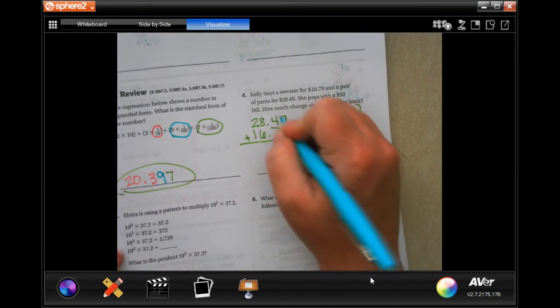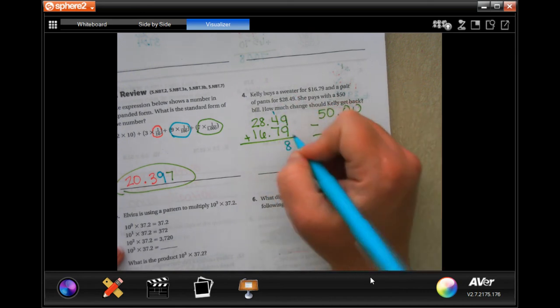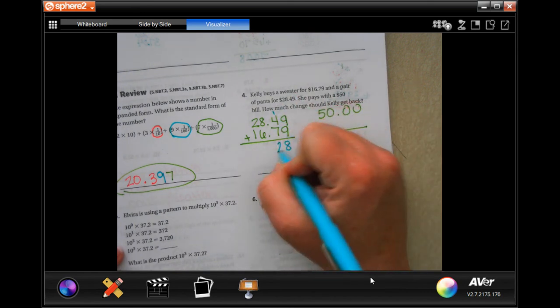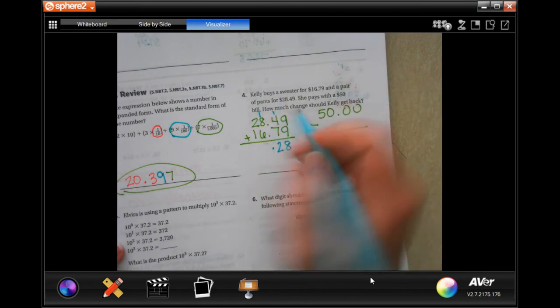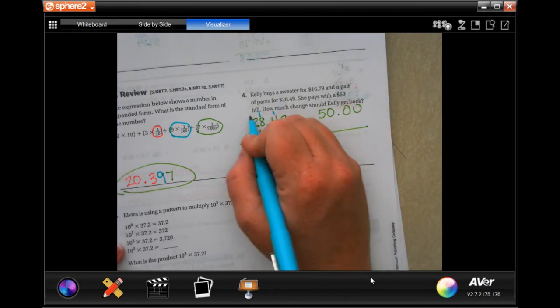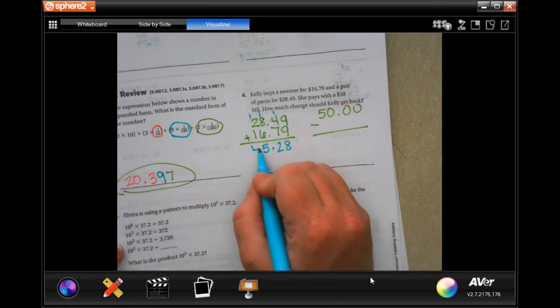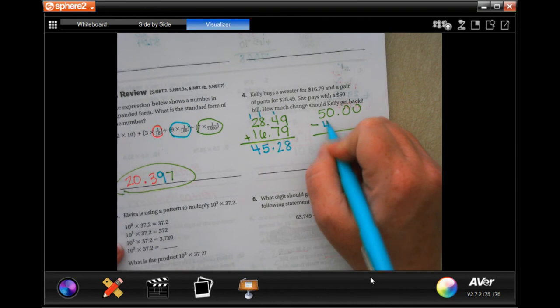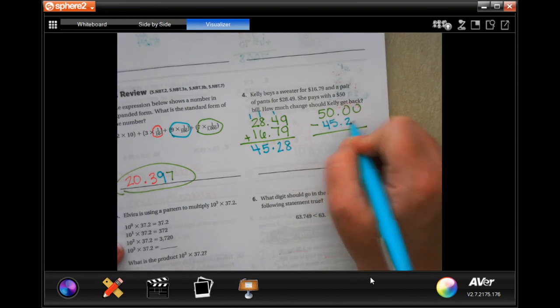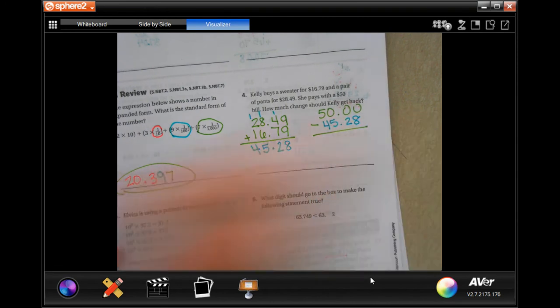Nine plus nine is eighteen, carry the one. One plus four is five, plus seven is twelve, and drop our decimal down. One plus eight is nine, plus six is fifteen, carry the one. One plus two is three, plus one more is four. So she spent $45.28.